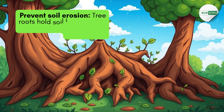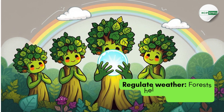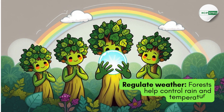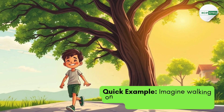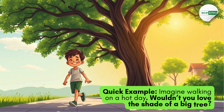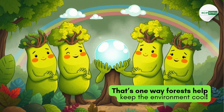4. Prevent soil erosion — tree roots hold soil in place and stop it from washing away during rains. 5. Regulate weather — forests help control rain and temperature. For example, imagine walking on a hot day. Wouldn't you love the shade of a big tree? That's one way forests help keep the environment cool.